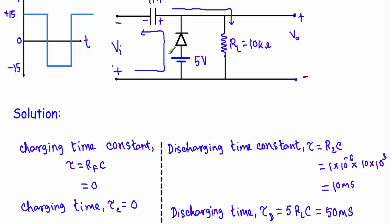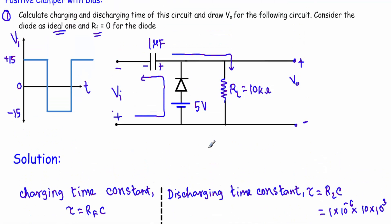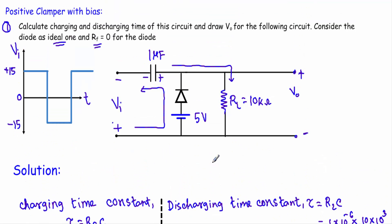The discharging time is 50 milliseconds and the charging time is 0. Therefore the charging time is much much smaller than the discharging time. Since the circuit contains a capacitor, diode, and resistor, I can conclude this circuit will act as a clamper circuit. And since the diode is in the upward direction, this will be a positive clamper circuit.